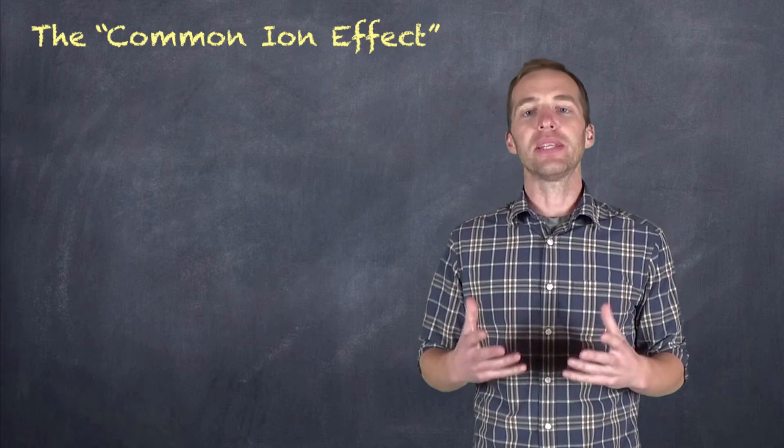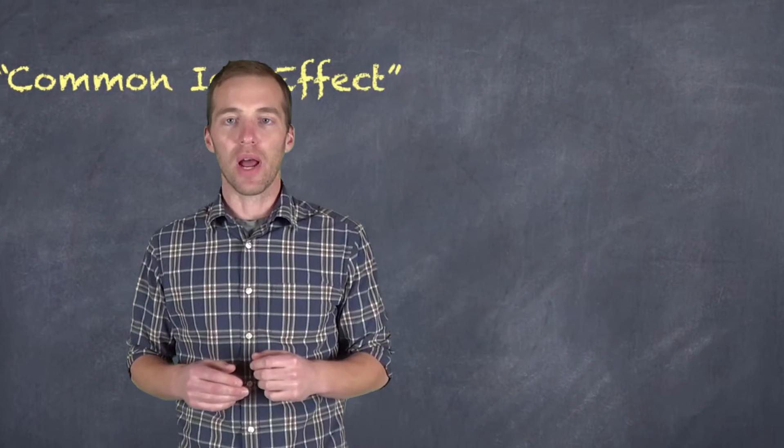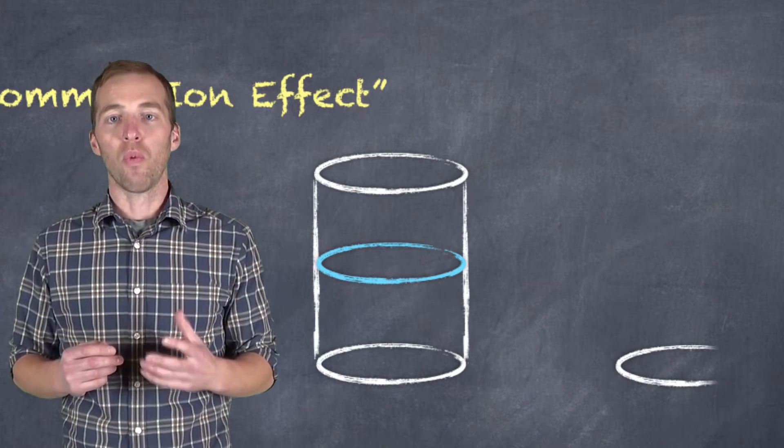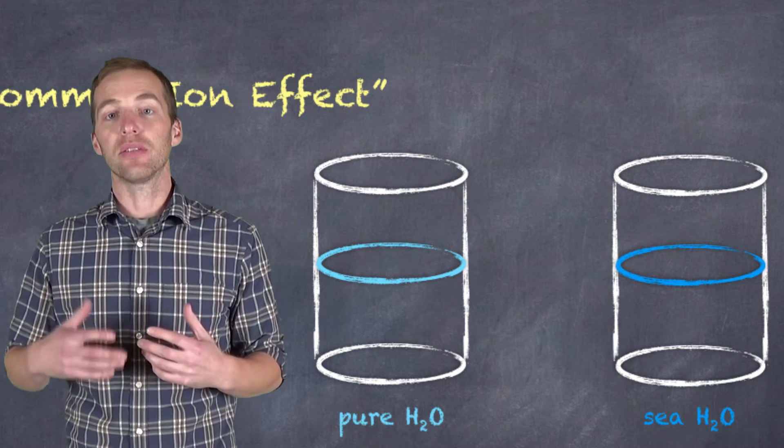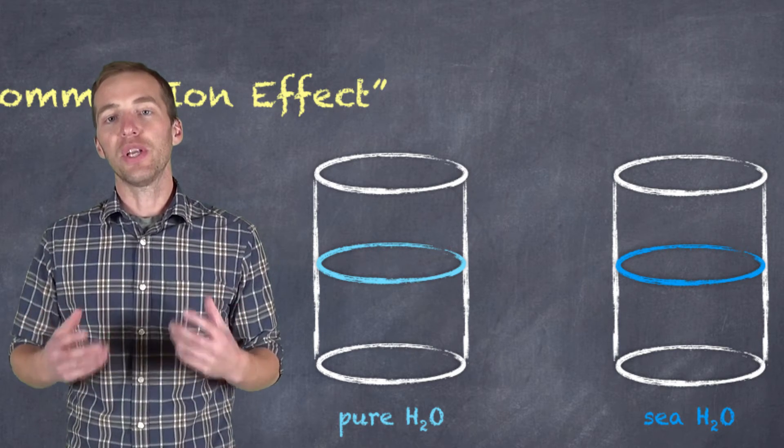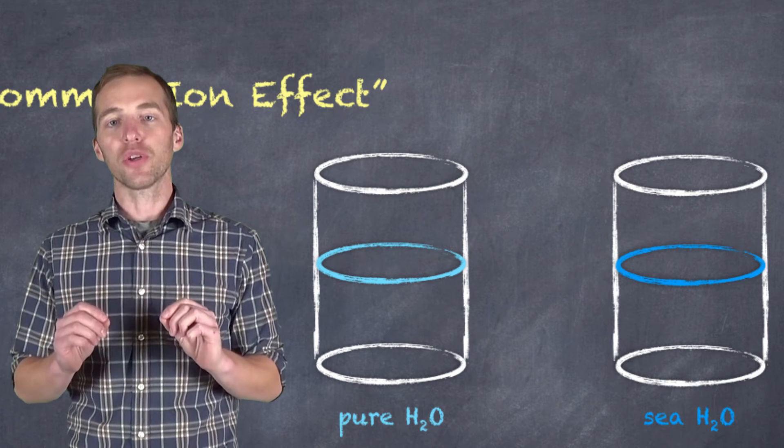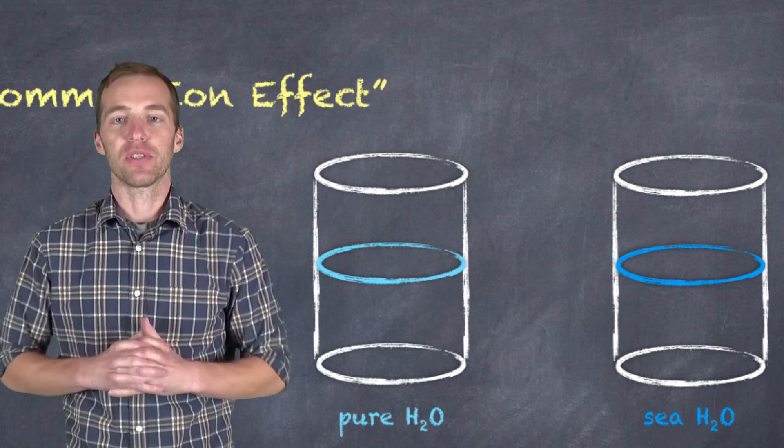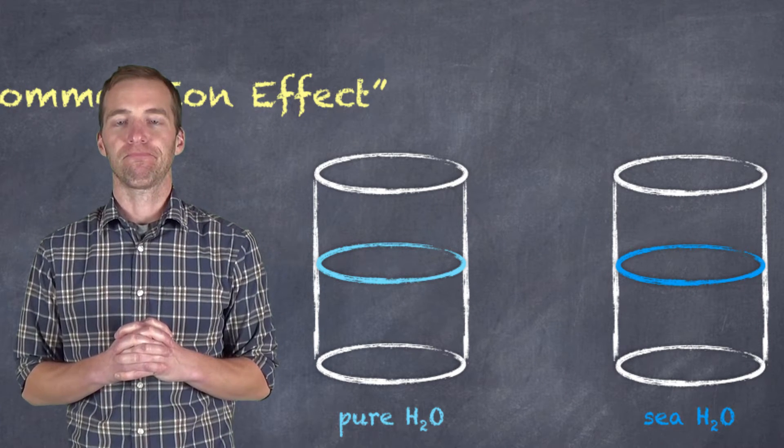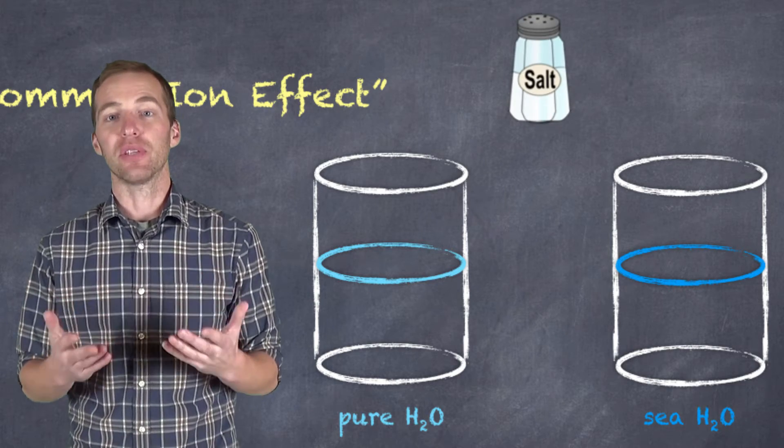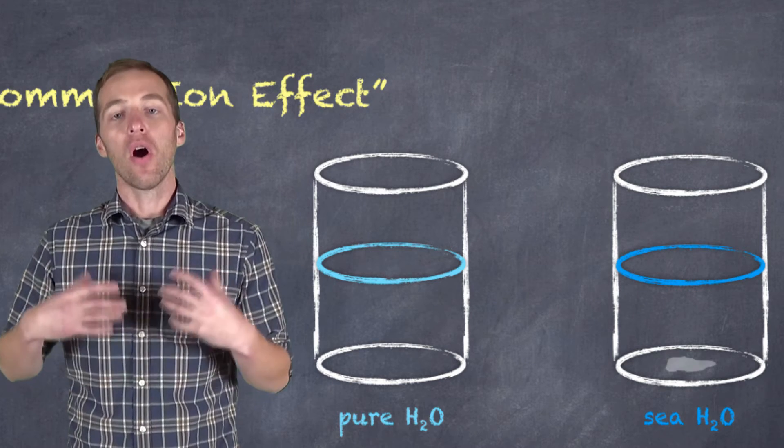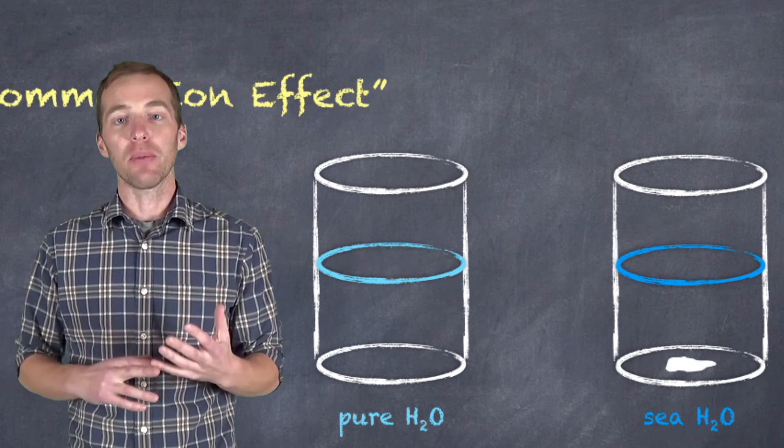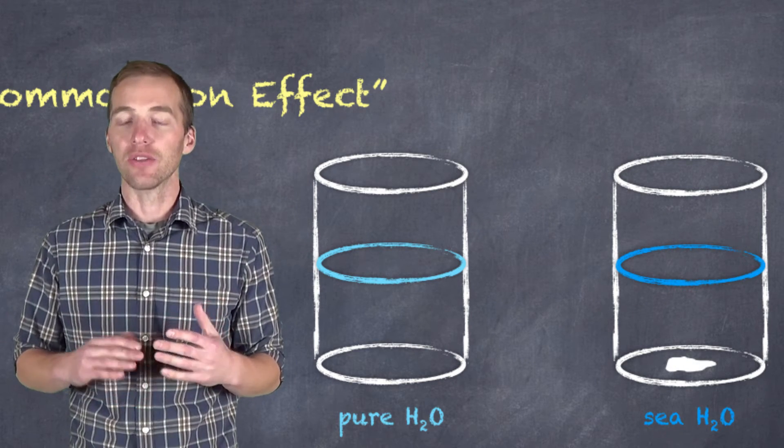Let's say we were going to add table salt, sodium chloride, to two samples of water. One of the water samples is pure water. The other sample is seawater. Which one do you think we could add more salt to before a precipitate would form? Well, if you said the water, the pure water, you're absolutely correct, because the seawater already contains sodium ions, already contains chloride ions.